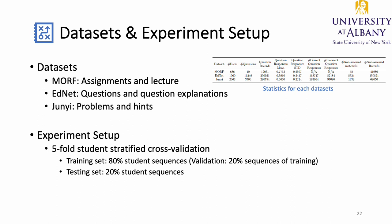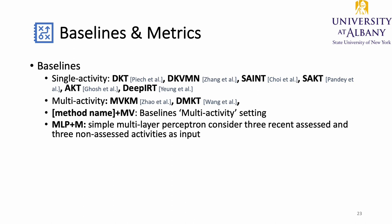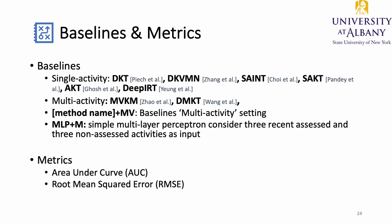At each fold, sequences from 80% of students are used as the training set, and sequences from the remaining 20% are used as the testing set. We also use 20% of student sequences from the training set as a validation set for tuning parameters. We utilize six state-of-the-art single-activity models and two multi-activity models as baselines, and also extend the six single-activity models to handle multi-type activities, called plus-M baselines. Including an extended MLP baseline, we have 14 baselines in total. We use RMSE for the Morph dataset and AUC for AetNet and JunYi.